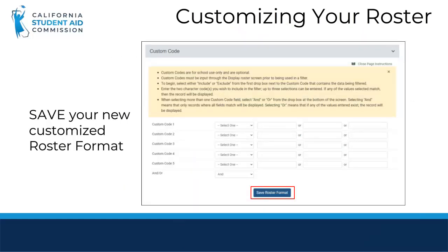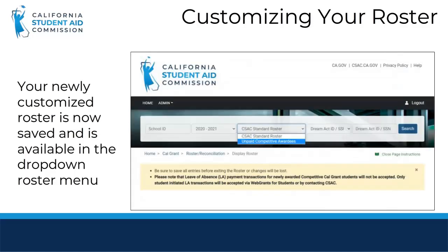Finally, make sure that you select the Save Roster format at the bottom of the screen to save your new custom roster. Once saved, you will be able to access your custom roster for future use — in this case, the unpaid competitive awardees roster. Any other custom rosters that you create can always be deleted if needed. This is a great tool to help you better administer Cal Grants for the students who rely on them.